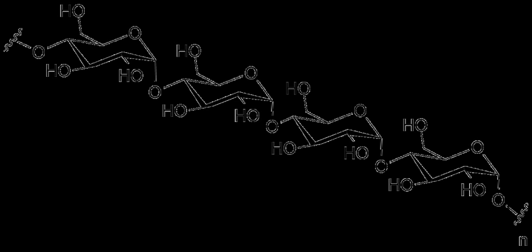Starch is a glucose polymer in which glucopyranose units are bonded by alpha linkages. It is made up of a mixture of amylose and amylopectin. Amylose consists of a linear chain of several hundred glucose molecules and amylopectin is a branched molecule made of several thousand glucose units.